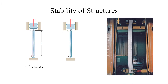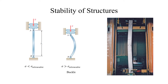Stability of structure. Column buckling depends on the applied stress. If the applied stress is less than the allowable stress, the column will not buckle. However, if the stress is more than the allowable stress, the column will buckle as shown in the figure.